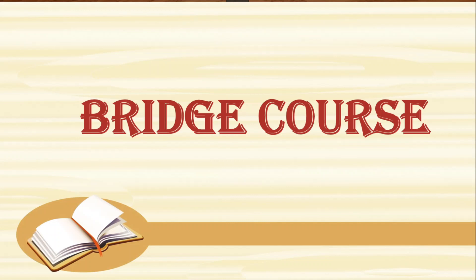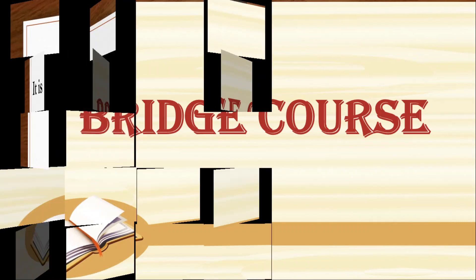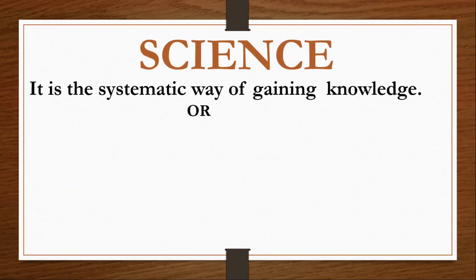It is just like a foundation or a base which you need to know to understand the concepts in the PU level or pre-university level. That is why it is very, very important. Next, that is science. Right from your primary level, you have been studying this as a subject — science. And as soon as if I ask you to define science, immediately the statement is: it is a systematic way of gaining the knowledge.